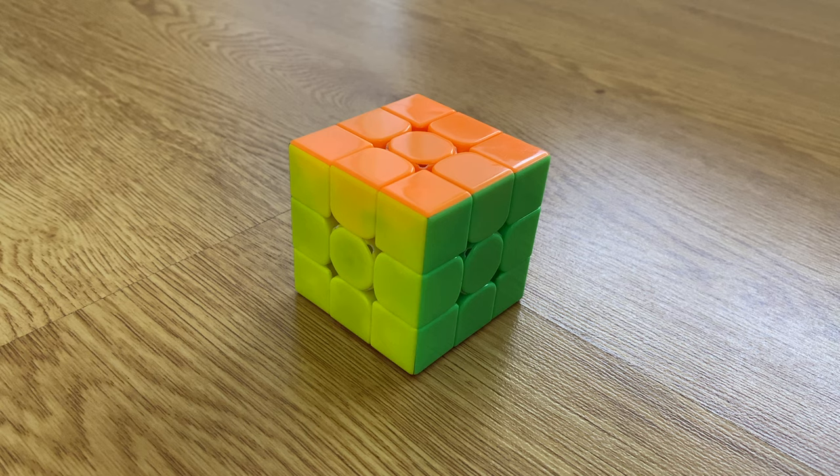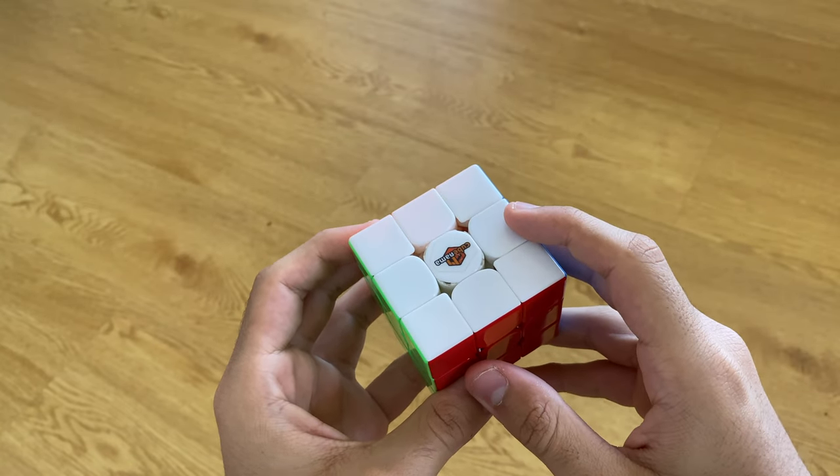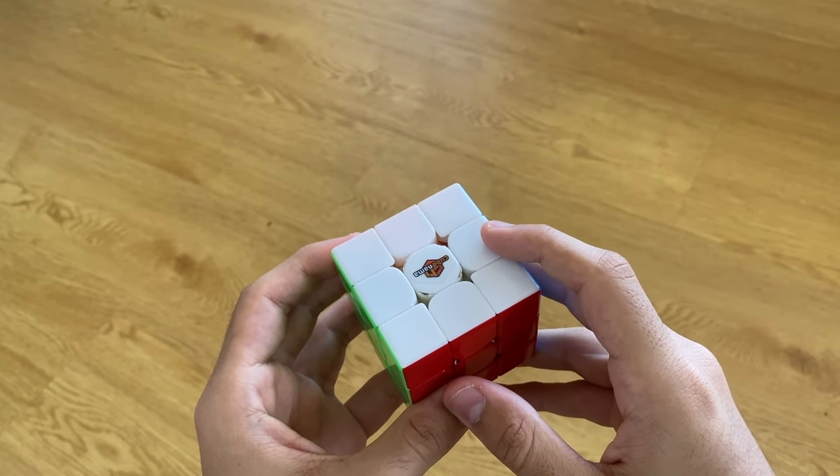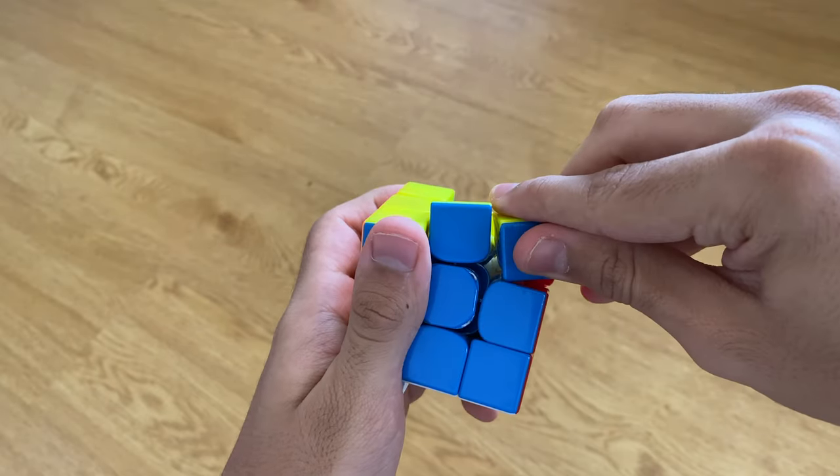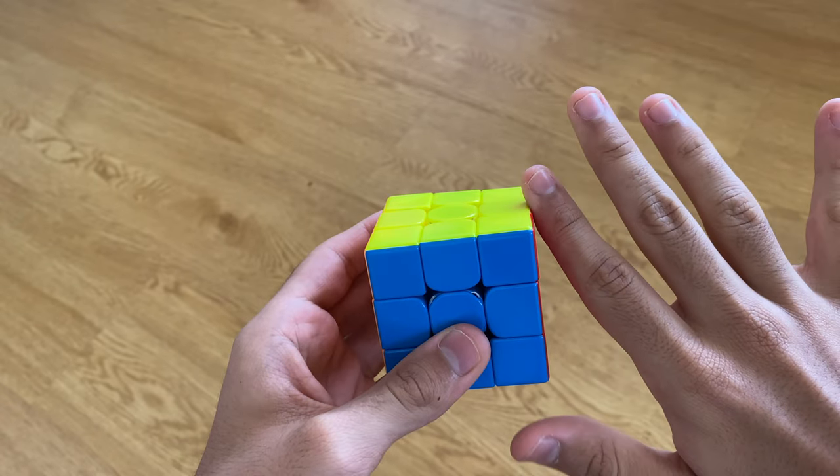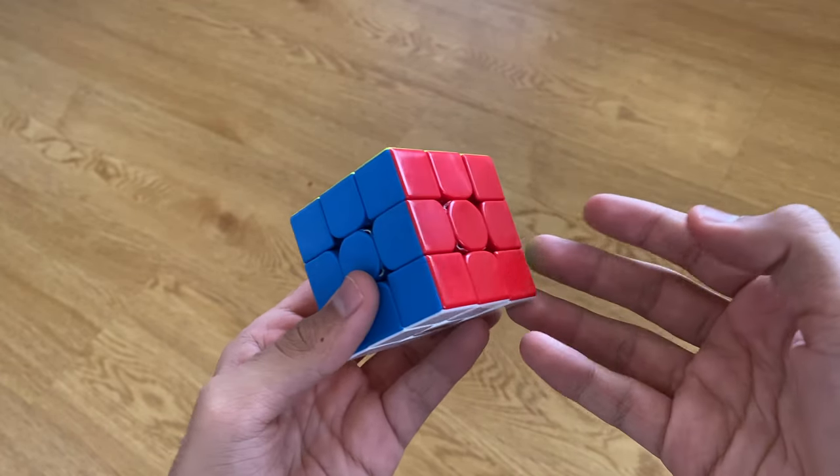One small issue I've had with this puzzle is that I do get some minor catches while spamming TPS on my last layer. Now this isn't a deal breaker because my turning is pretty rough during last layer. However, it is a thing to consider. Pops and corner twists absolutely never happen on this puzzle and they're not really a thing you should really think about in 2021.